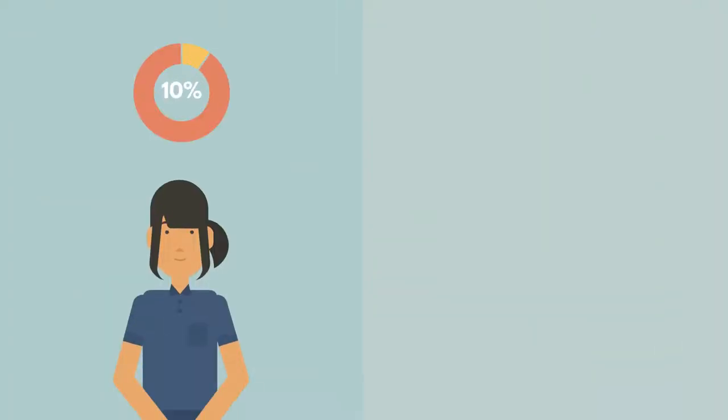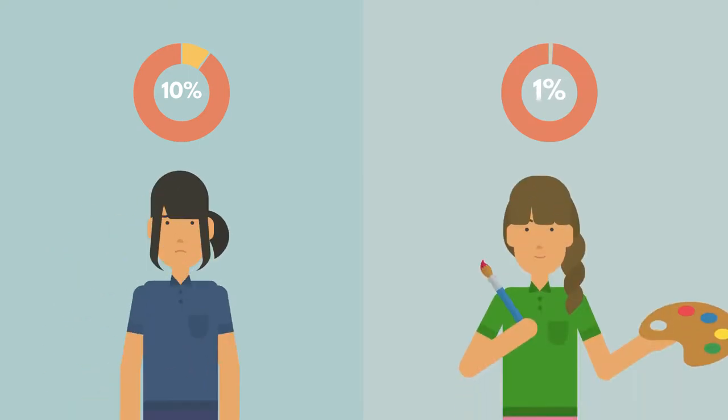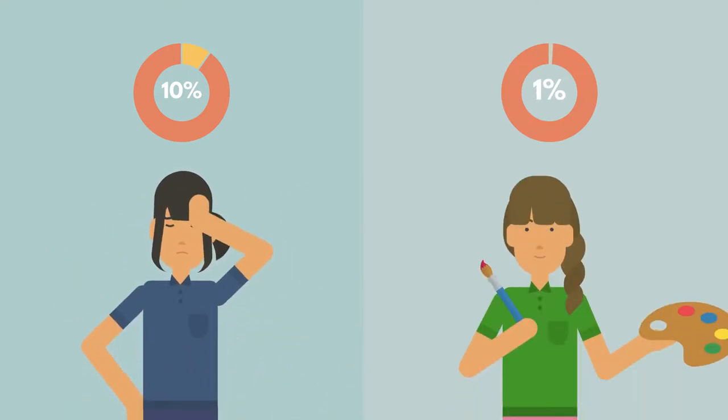For example, just under 10% of Year 10 students say they want to work in the arts. This is understandable. The arts is a very popular industry. But the problem is that it only offers around 1.6% of all jobs.